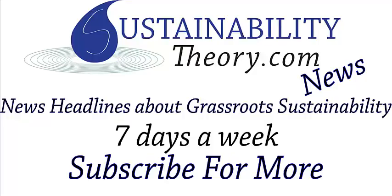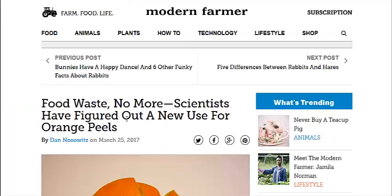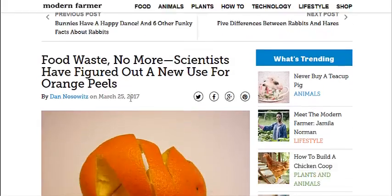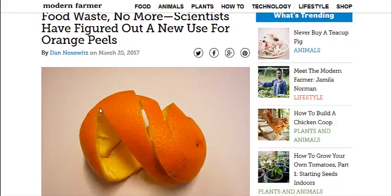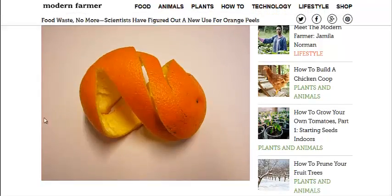Hello, Carl here with Sustainability Theory News. We're over at ModernFarmer.com. They have an article, Food Waste No More, talking about an orange peel being turned into a water filtration medium, specifically to get heavy metals out of wastewater.